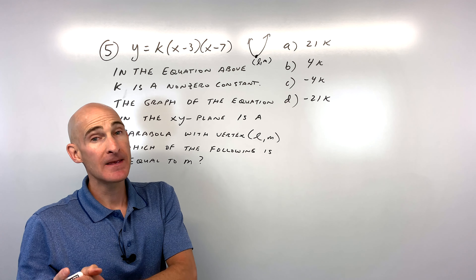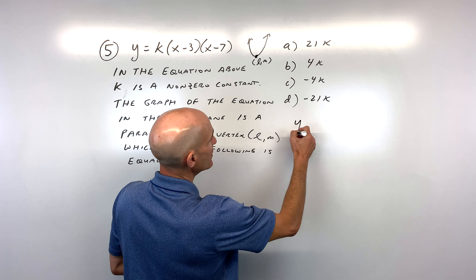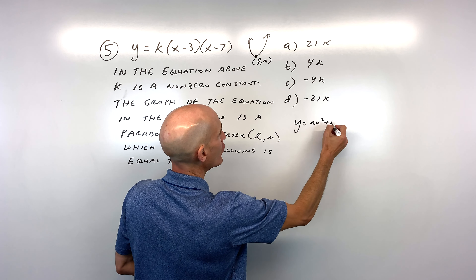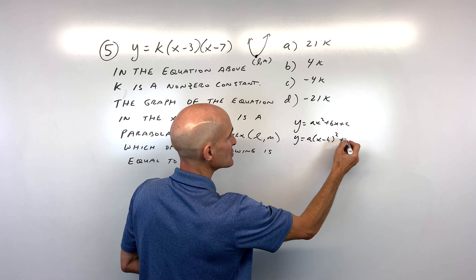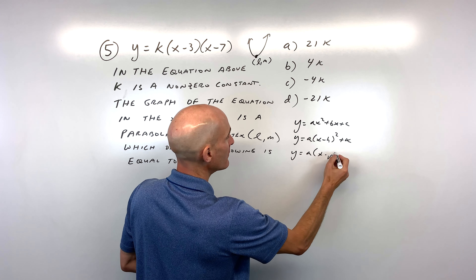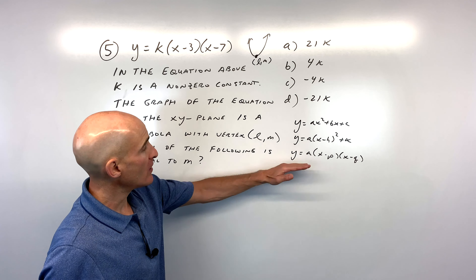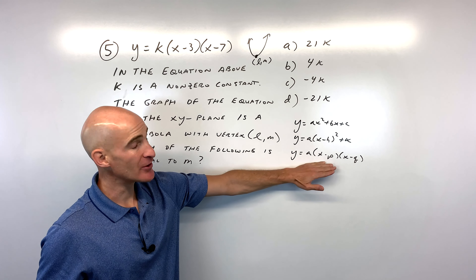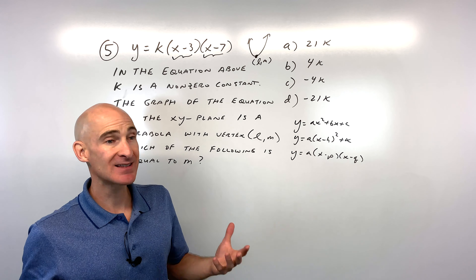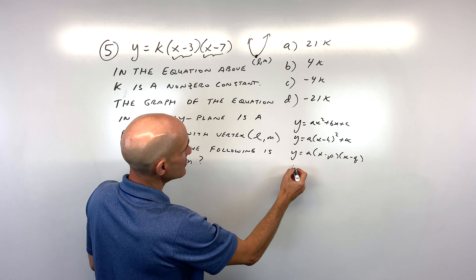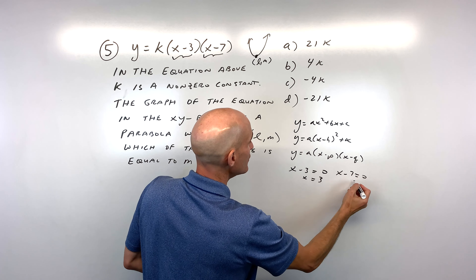They're testing us on the different forms of the parabola: general form ax² plus bx plus c; vertex form a(x minus h)² plus k; and intercept form a(x minus p)(x minus q). This equation is in intercept form, so setting x minus 3 equal to zero gives x equals 3, and setting x minus 7 equal to zero gives x equals 7 — those are the x-intercepts.